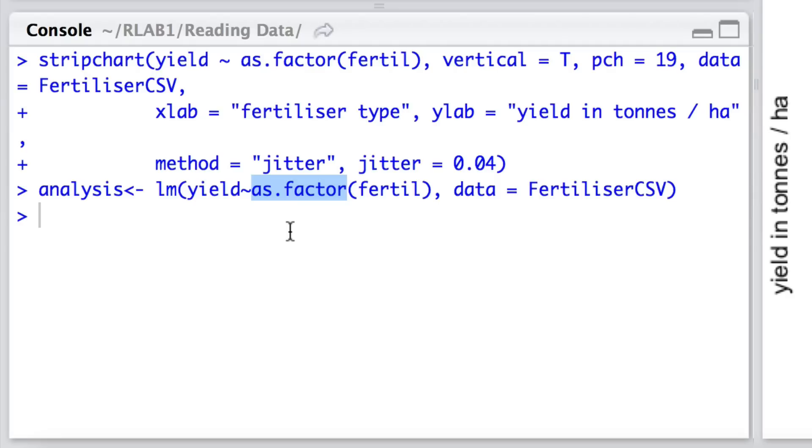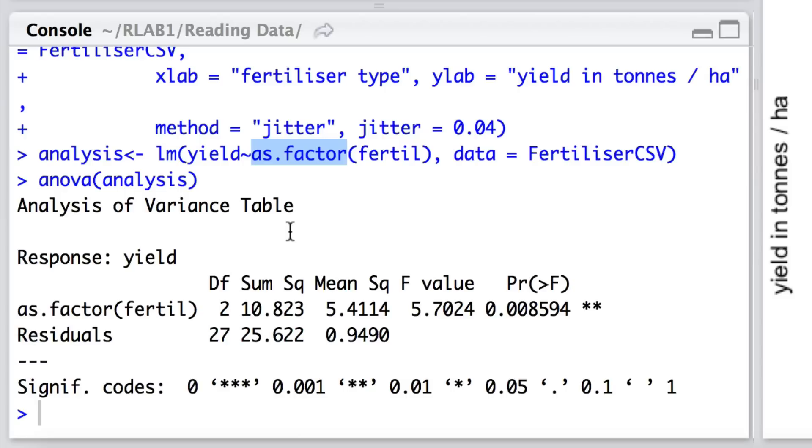So we've now fitted our linear model, but what we would like to do is to understand the structure of that fitted model. So here what we do is we call up the ANOVA for that analysis, and what you'll see here is the partitioning in terms of sums of squares and degrees of freedom that you were introduced to in the theory.